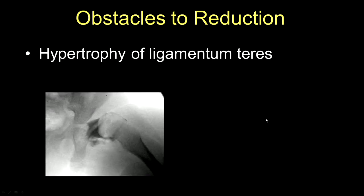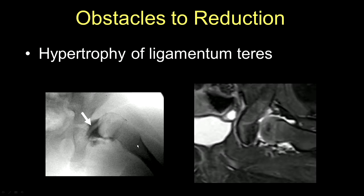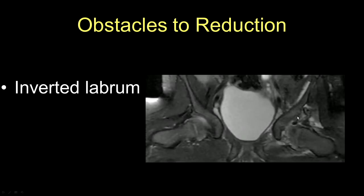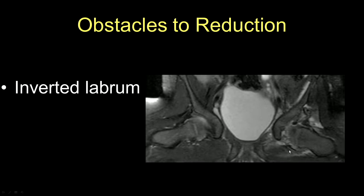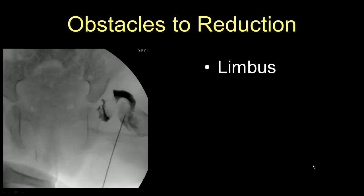Hypertrophy of the ligamentum teres: this is an image where contrast material has been injected into the joint. Notice this structure — a ligamentum teres that is very fat and is keeping the femoral head outside of the acetabulum. This patient also had a pulvinar. Here is an inverted labrum — the labrum normally is a little triangular fibrocartilaginous structure that should be nicely seated on top of the femoral head. In this case, it is inverted and keeping the femoral head away. And here is the limbus, that ridge, keeping the femoral head from getting into the depth of the acetabulum.